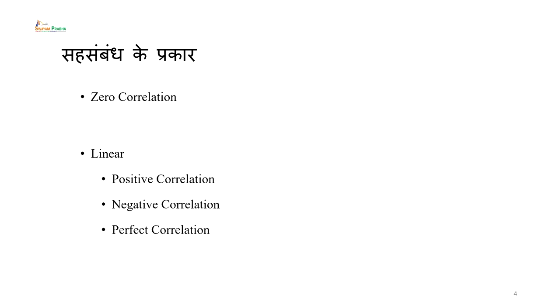Assumptions और utility समझने के बाद अब हम correlation के types की चर्चा करते हैं। सबसे पहला प्रकार है zero correlation। Zero correlation का अर्थ है कि दोनों variables के बीच में किसी प्रकार का कोई संबंध नहीं है। यह practically कुछ not accepted जैसा लगता है क्योंकि जब भी कोई दो variables होते हैं तो उनके बीच में कोई न कोई संबंध होता है, चाहे वो review of literature से समझा हो या कहीं observe किया हो।